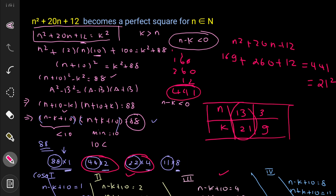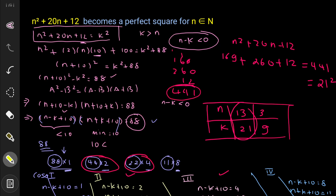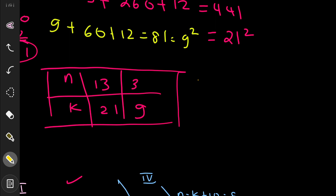Verifying n = 3: 3² + 20×3 + 12 = 9 + 60 + 12 = 81 = 9². This also checks out. So the final answer is n = 13 and n = 3 — these are the values for which n² + 20n + 12 becomes a perfect square.